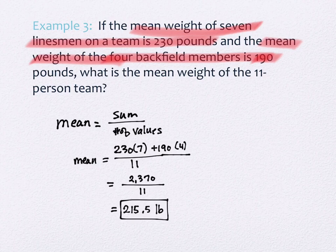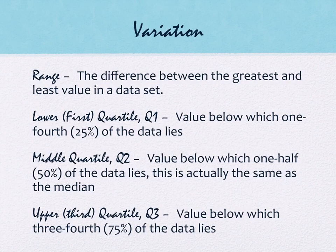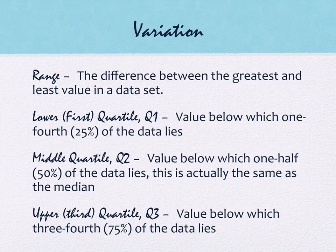Measures of central tendency is a small part of this section; measures of variation is longer. The first measure of variation is range. Range just means the spread of values - specifically it's the difference between the largest and the smallest value in the data set. Going back to our data set, the largest value is 30, the smallest is 12, so 30 minus 12 gives a range of 18.